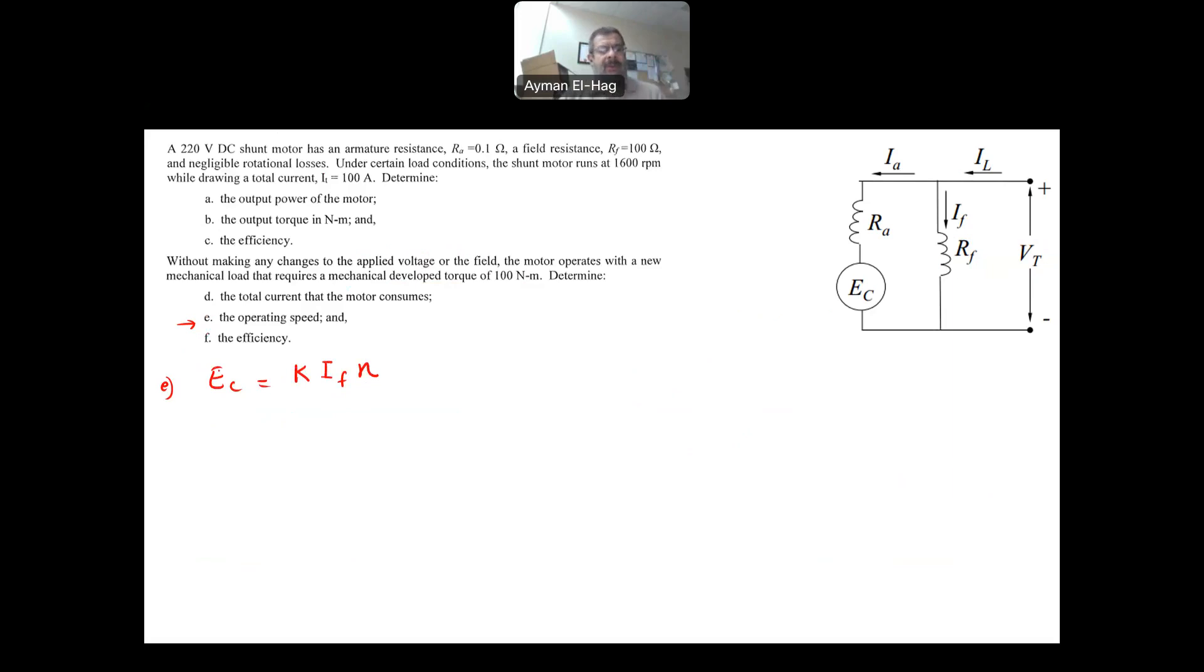So first, we need to find EC at these two different conditions. We need to find EC1. Now apply KVL, so EC is equal to VT minus IA RA. So here it's equal to VT doesn't change, it's a constant, minus IA1 times RA, RA is a constant. So this is equal to 220 minus IA1 97.8 times RA, which is the 0.1, and this will give me 210.22 volt. EC2, which is 79.7 times 0.1, and this will give me 212 volt.